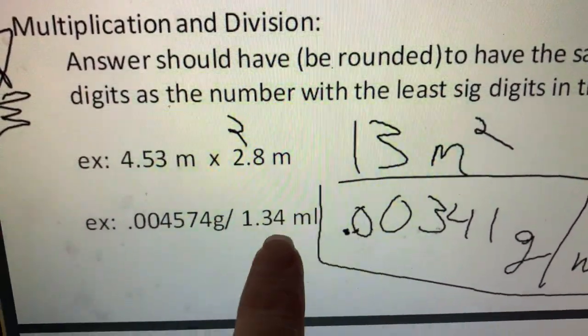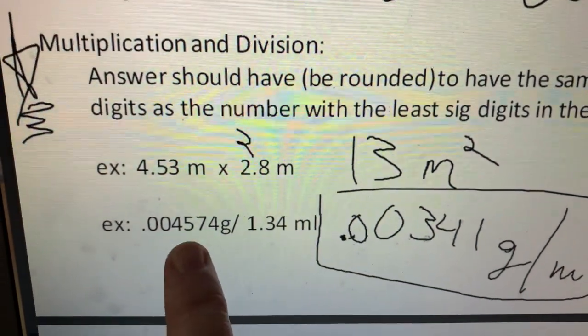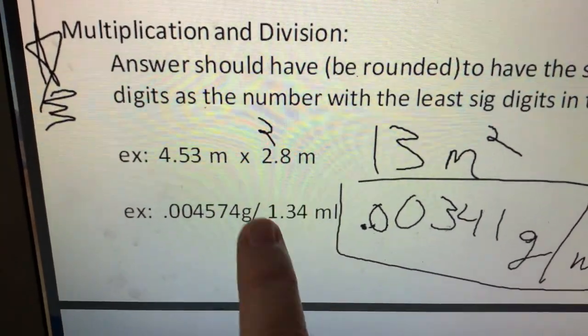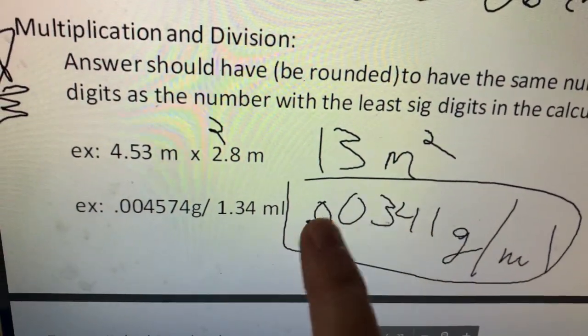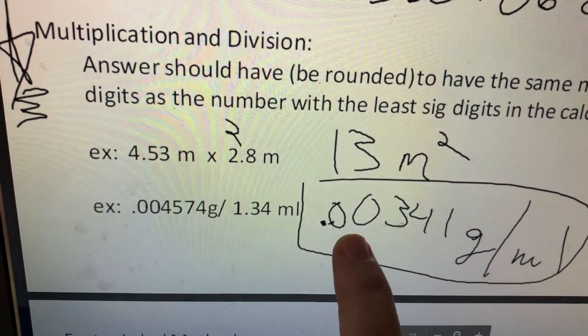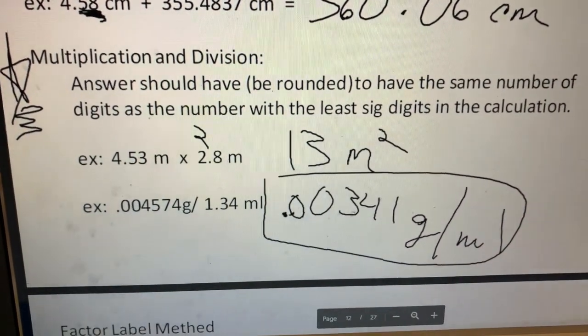Second example. You're going to take this mass divided by that volume. This is a density. My mass has four significant figures but my volume only has three. I must round my answer to have only three. Again these two zeros are placeholders so they don't count when it comes to significant figures.